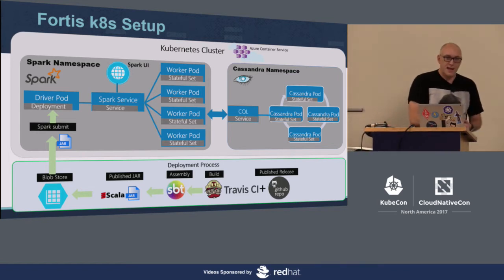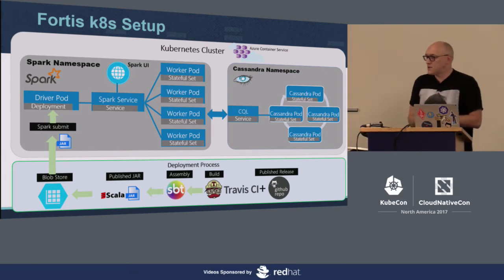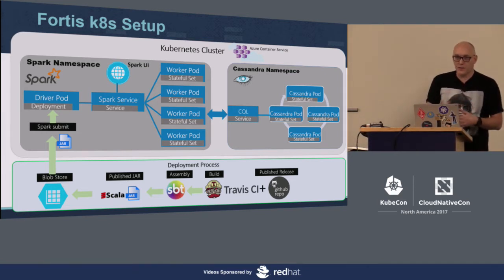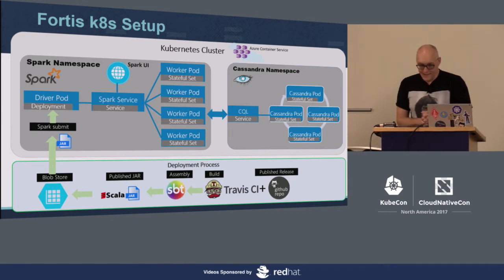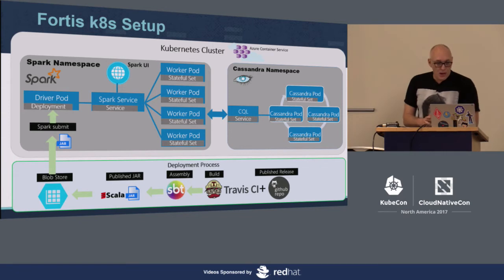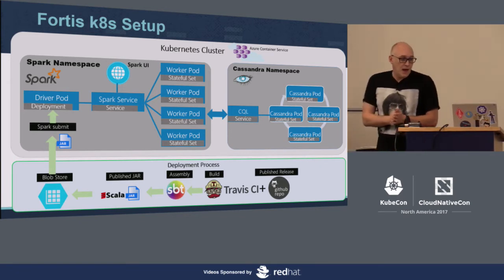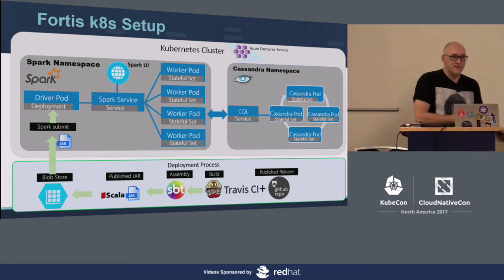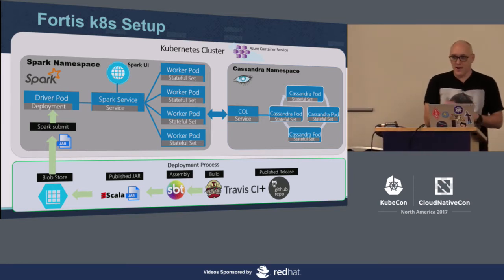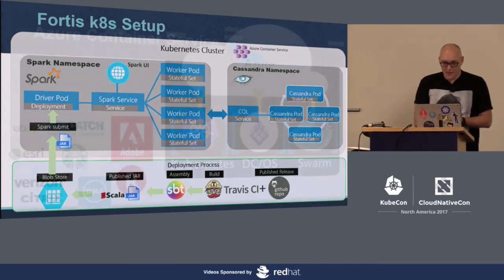We also have the Cassandra nodes running in the cluster. With Cassandra, we optimized the chart mostly with an eye on high availability within Kubernetes and optimizing for how things run in Azure. We're using stateful sets here because pod identity becomes very interesting when you try to discover services.